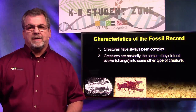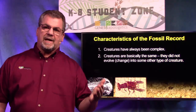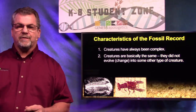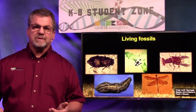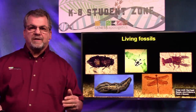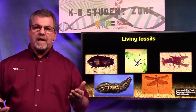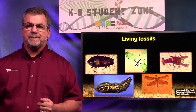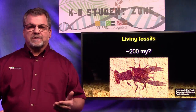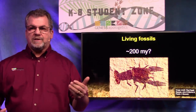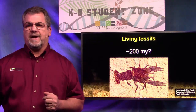The second thing to think about is that creatures are basically the same — we don't see animals changing from one type to another. Have you ever heard of living fossils? These are fossils that are supposed to be millions of years old but look a lot like what we have living today. Here are some examples. That, of course, is a lobster — supposed to be 200 million years old, but it looks just like lobsters today.